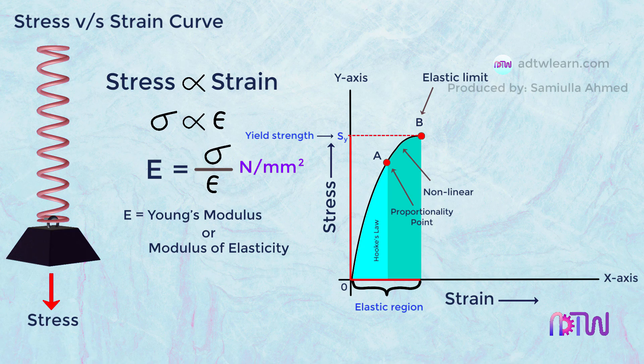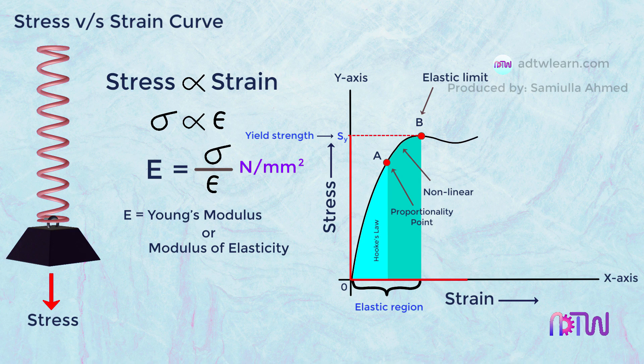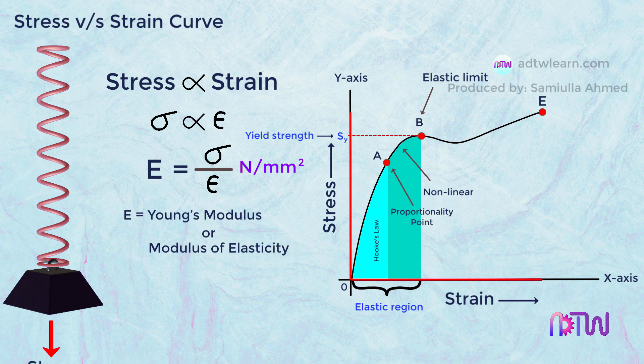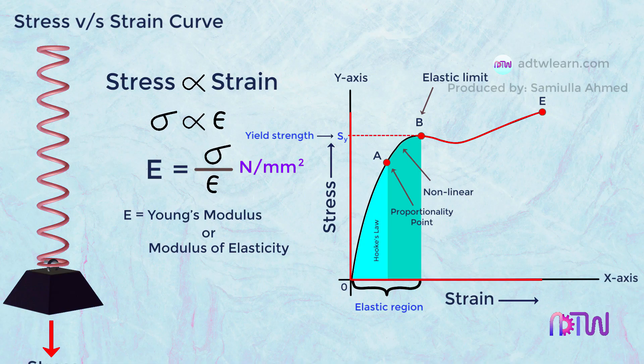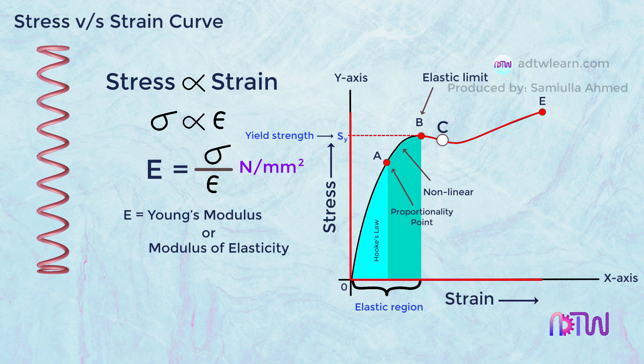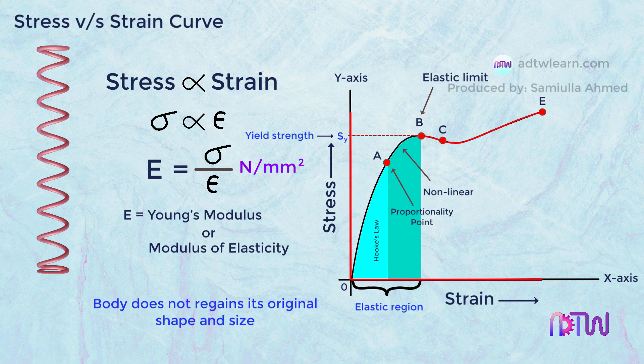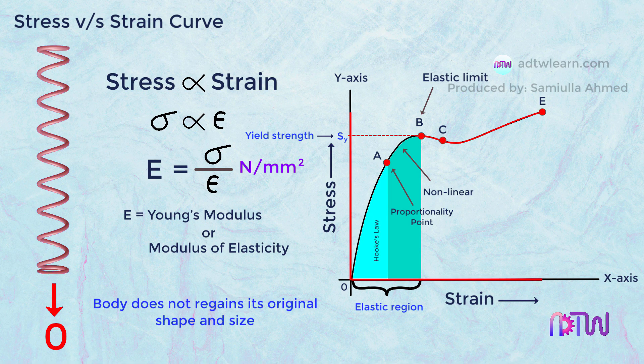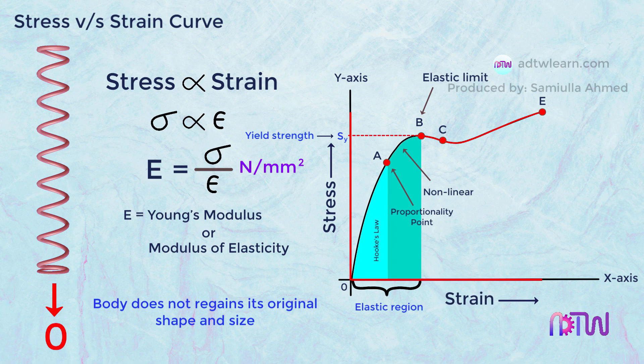If we further increase the load or the stress, the strain increases rapidly, even for a small change in stress. And this curve is represented by B-E. If we remove a load in between this region, suppose at point C, the body does not regain its original shape and size. In this case, even if the stress value is 0, the body will remain deformed, or the strain value will remain the same.